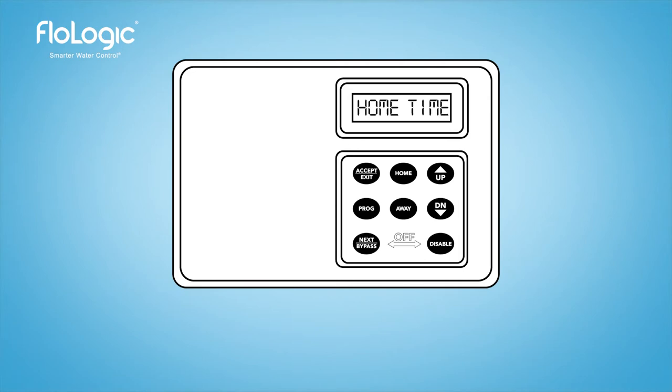When water flows constantly for longer than the mode settings allow, the water is shut off automatically and an audible beep emits from the control panel. Pressing the disable button silences the alarm and pressing the home button turns the water back on.